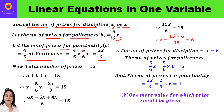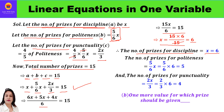Total prizes: x + 5x/6 + 2x/3 = 15. Taking LCM of 6: (6x + 5x + 4x)/6 = 15, so 15x/6 = 15. Cross-multiplying: x = 15 × 6/15 = 6. So x = 6, which is the number of prizes for discipline.